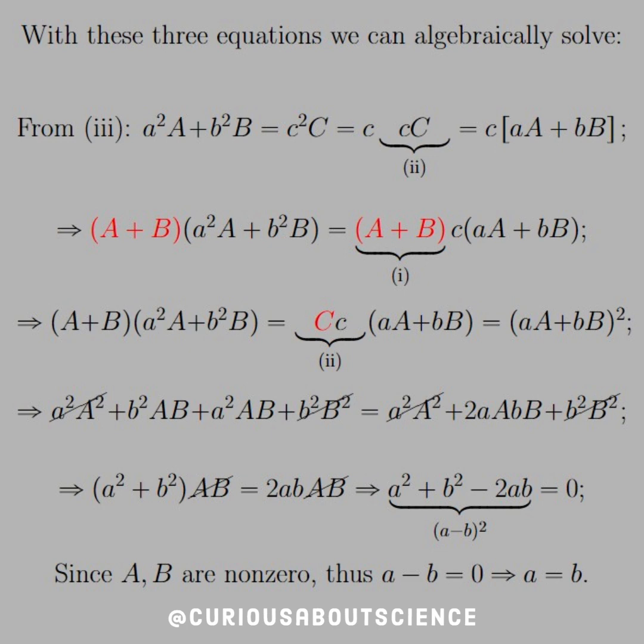All right, cool. So what this says is that we're now left with a squared plus b squared minus 2ab equals zero, if we put everything to one side. Well, what do you know? That looks to be the difference right now, so that's equal to (a minus b) squared. Since A and B are non-zero, this tells us that a minus b equals zero and a equals b. Wonderful.